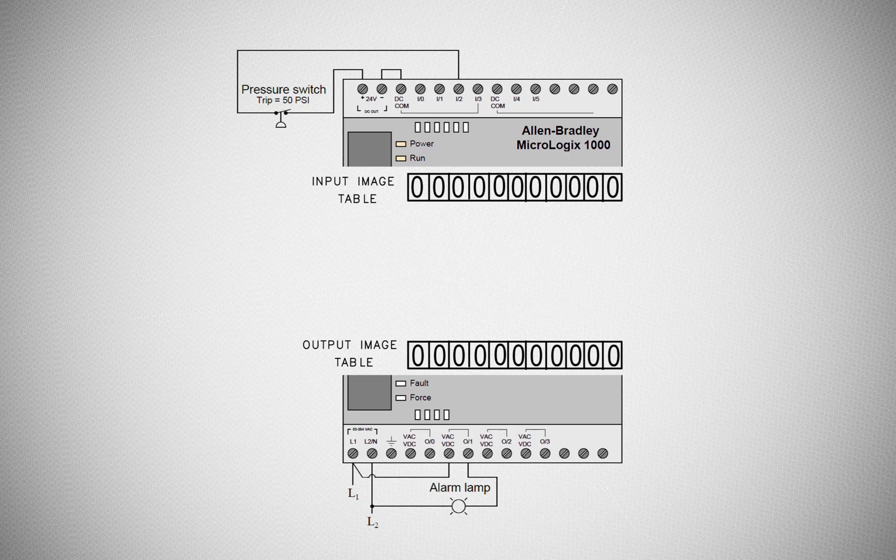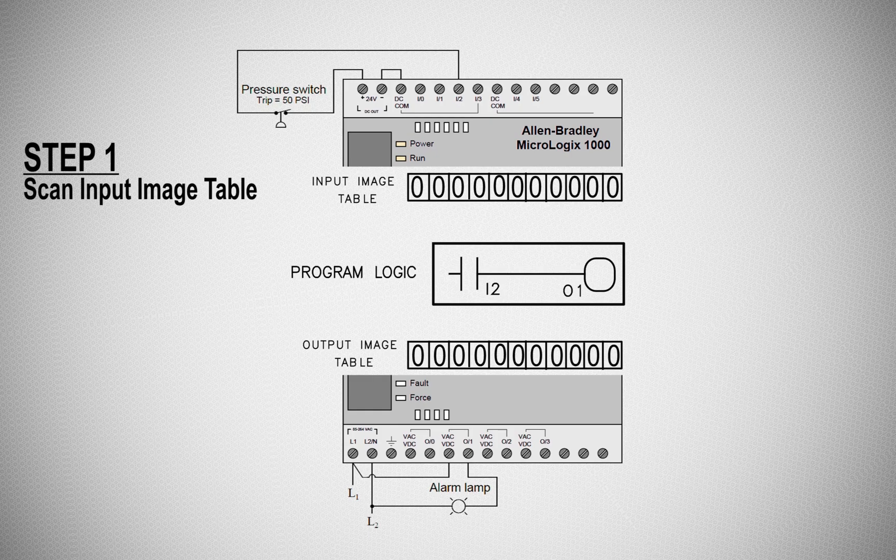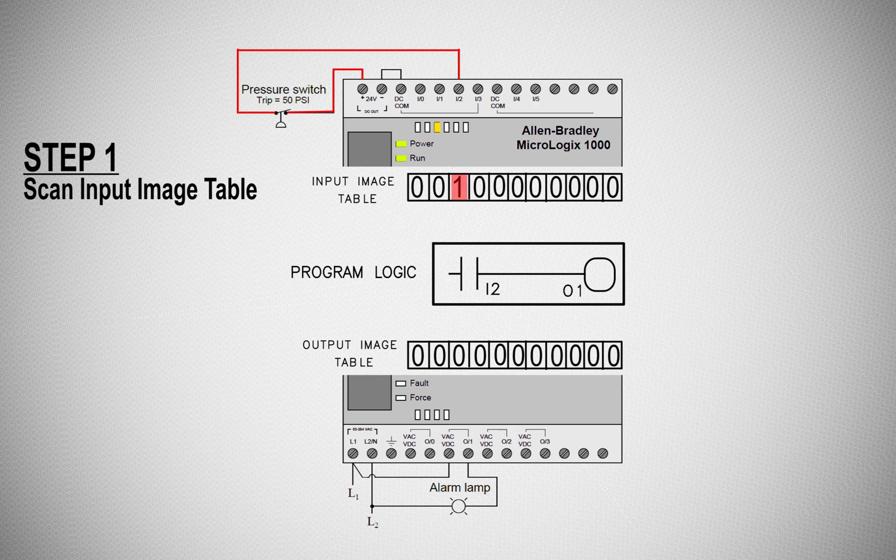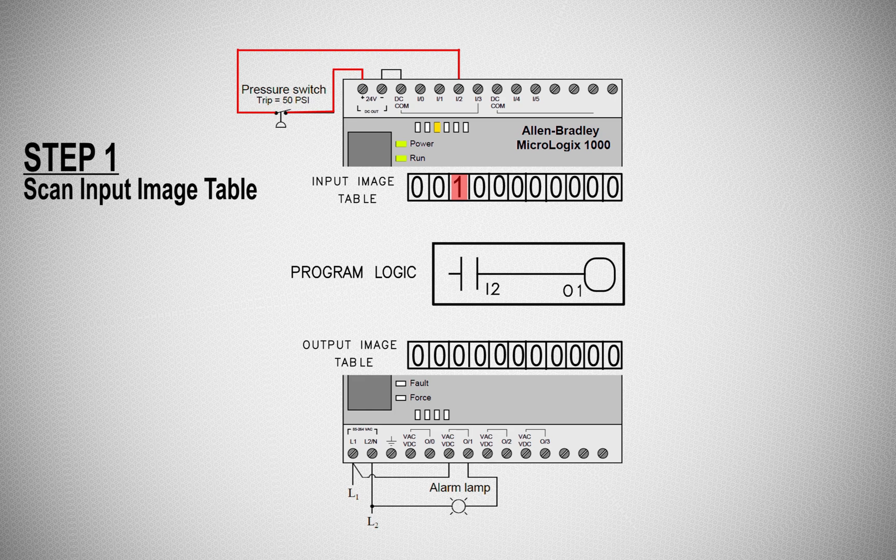In step number one, the PLC processor scans the input image table. If any input turns on, the PLC processor will update the input in the PLC input image table. Now as the PLC has information about which inputs are on or off, the processor goes to step number two.